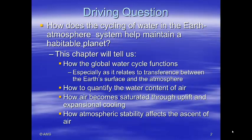The driving question from this chapter is: how does the cycling of water in the Earth-atmosphere system help maintain a habitable planet? We'll discuss how the global water cycle functions, how to quantify the water content of the air, how air becomes saturated through uplift and expansional cooling, and how atmospheric stability affects the ascent of air.